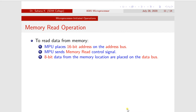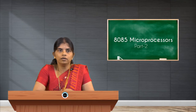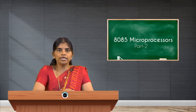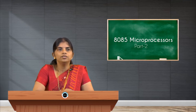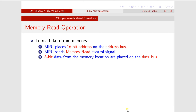Memory read operation means first of all we should know the address — the processor should know the address from where the data is to be taken. The address bus is there to identify that address. The processor has to give the address to the address bus. So the first step is: the 16-bit address is identified by the processor and placed on the address bus.